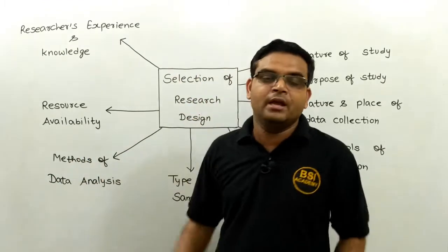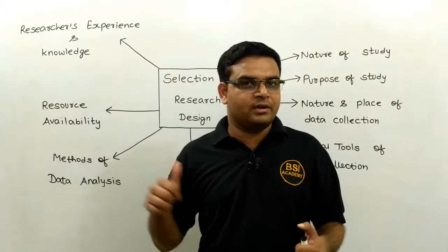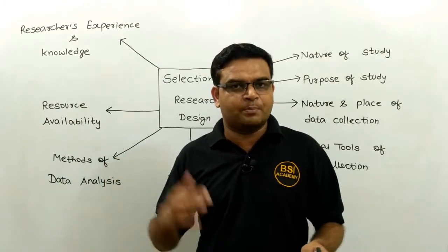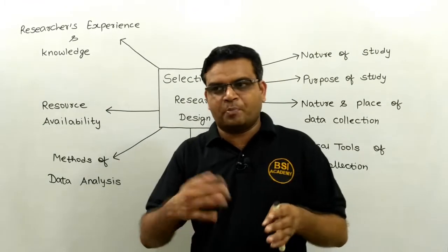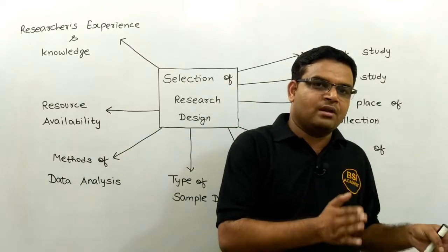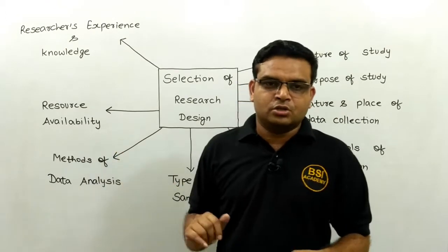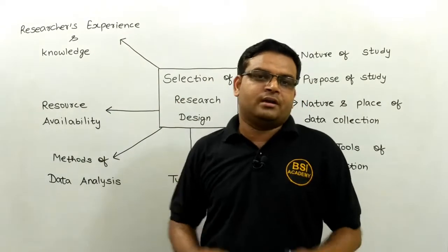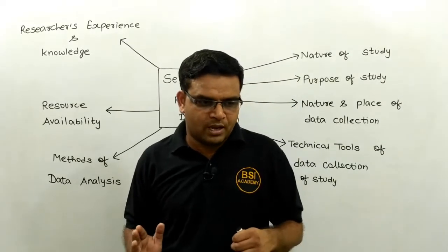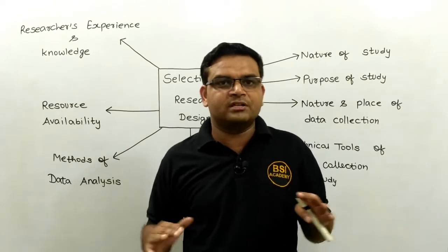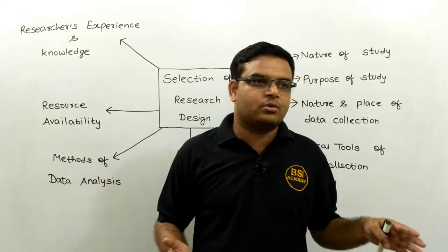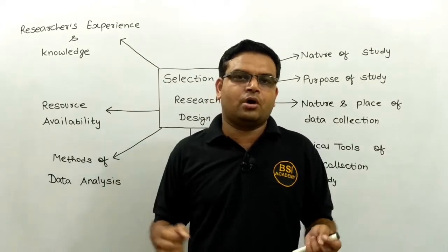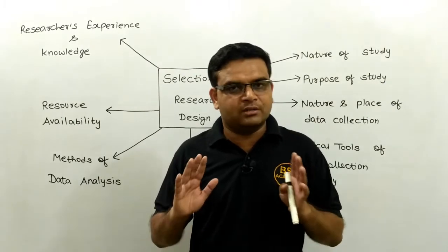Next is resource availability. For example, if past researchers or scientists have done some good study on a particular research design related to your topic, then I will select only that research design which has some traditional knowledge base. Resource availability plays a very important role in the selection of research design. The next important criterion is researcher experience and knowledge, because if you have done good research in the past, you know what kinds of research design are available. You can also design a hybrid research design by combining one or two types. Your past experience and knowledge are very important for the selection of research design.